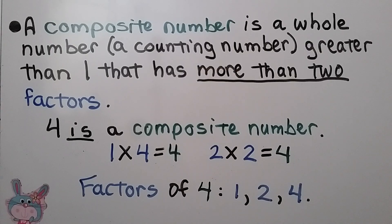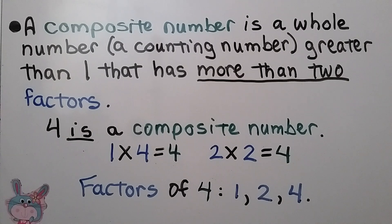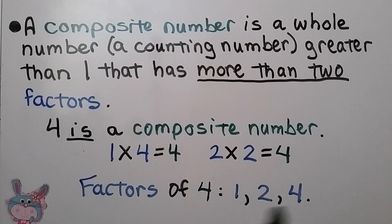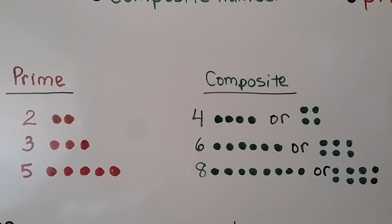A composite number is a whole number — a counting number greater than one — that has more than two factors. 4 is a composite number because we have 1 times 4 equals 4 and 2 times 2 equals 4. So the factors of 4 are 1, 2, and 4. It has 3 factors, so it's composite.